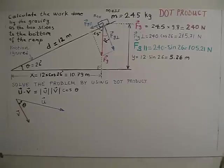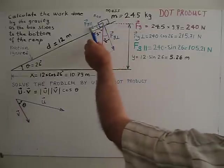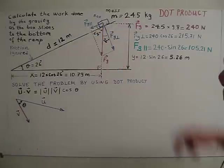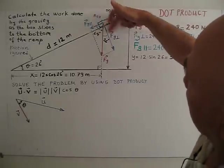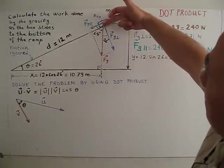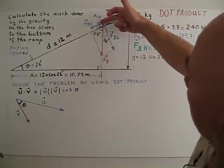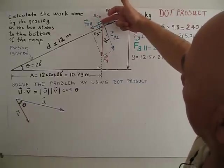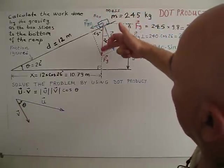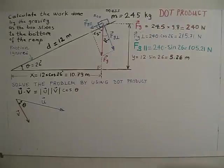I just find the component, I may need this information. Two components, one component parallel to the surface, another component perpendicular to the surface. I will call this FG parallel, FG perpendicular. This is FG, it is going center of the earth.